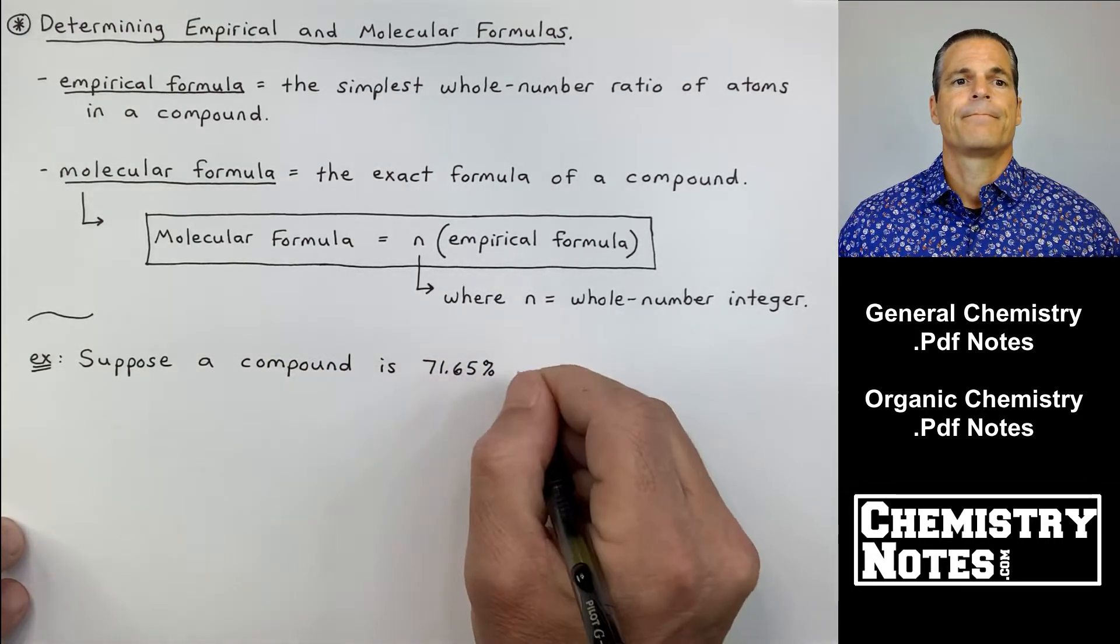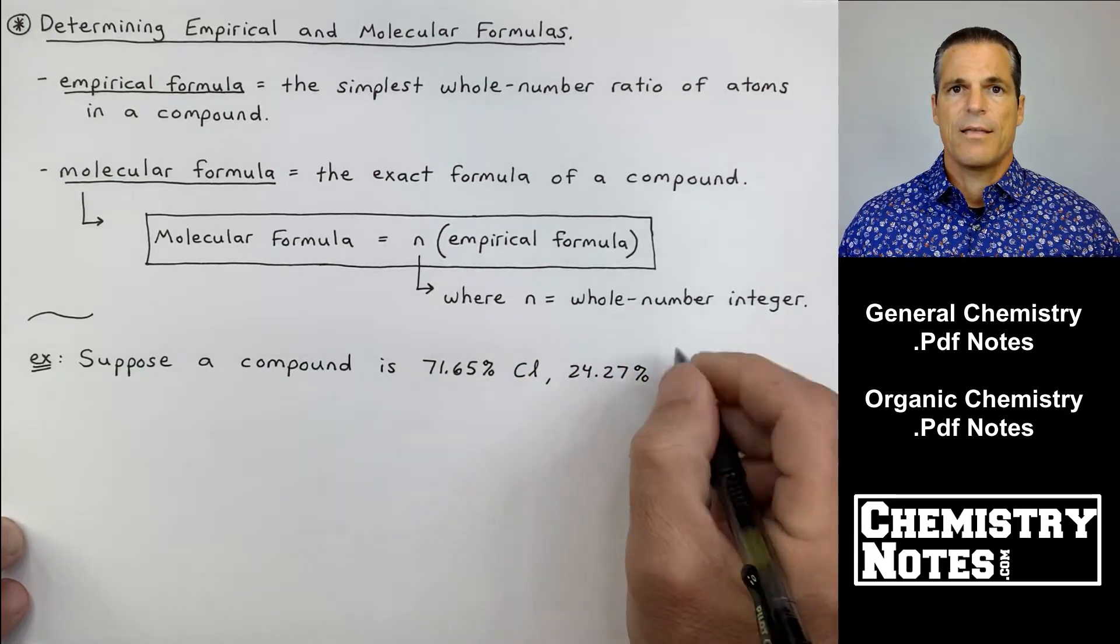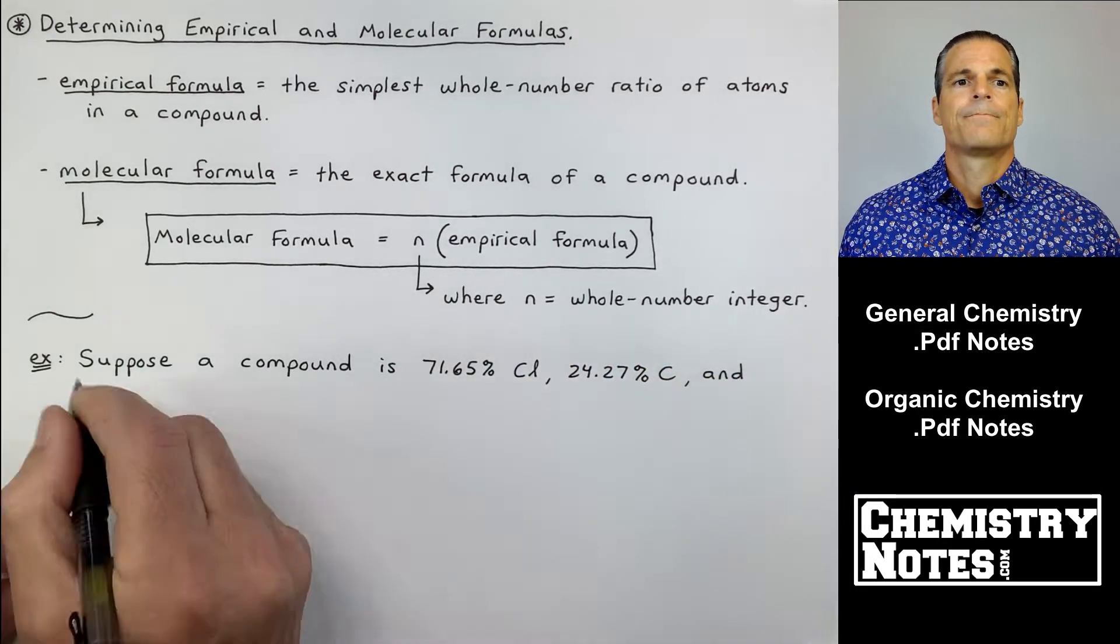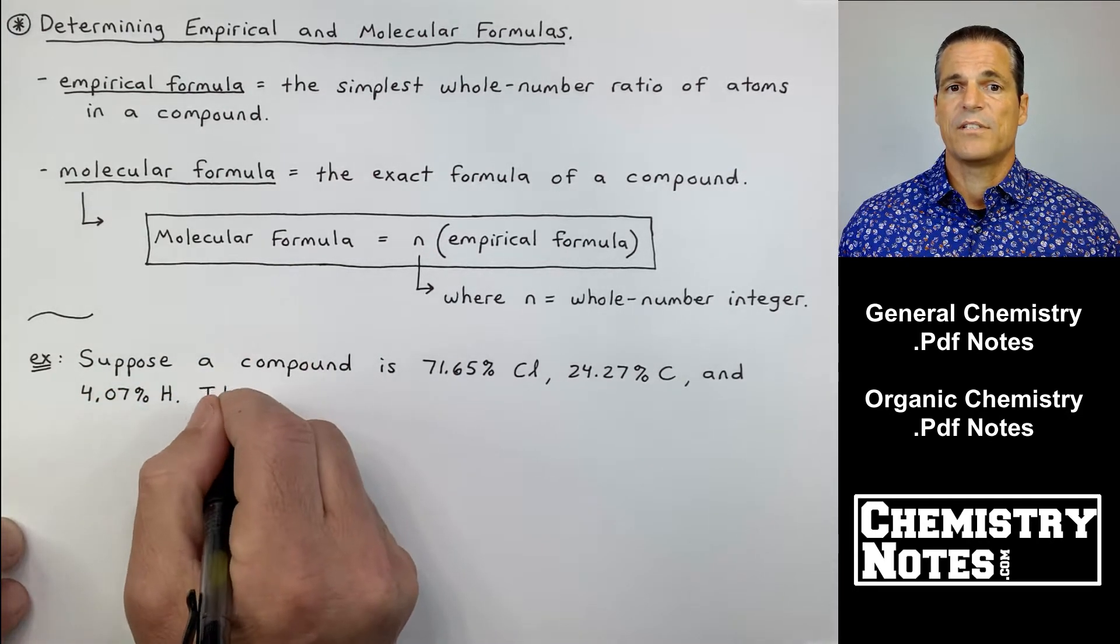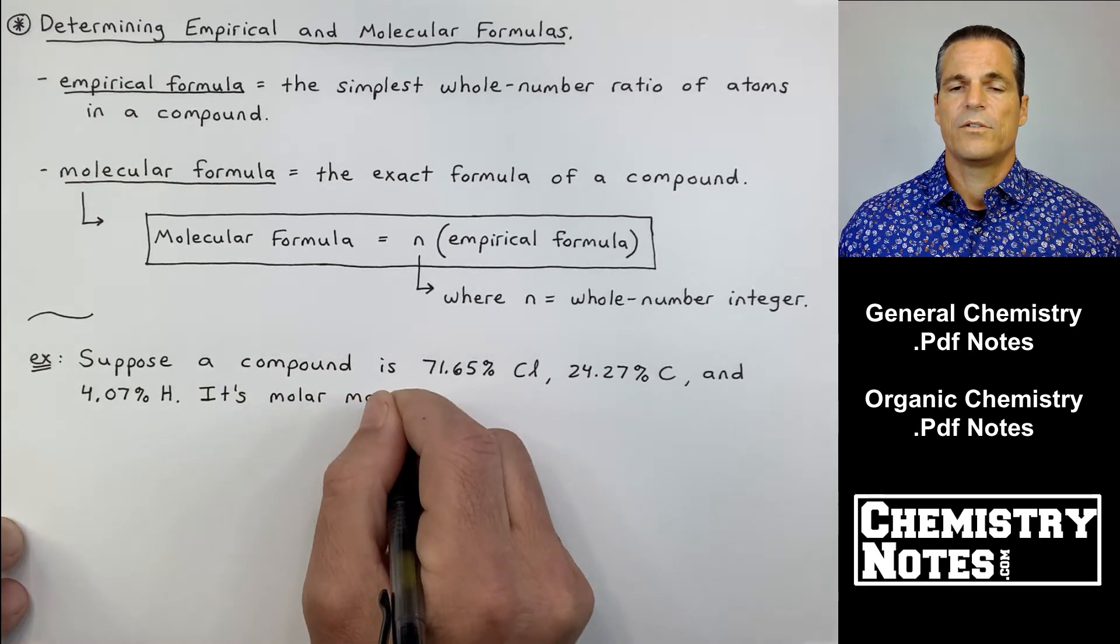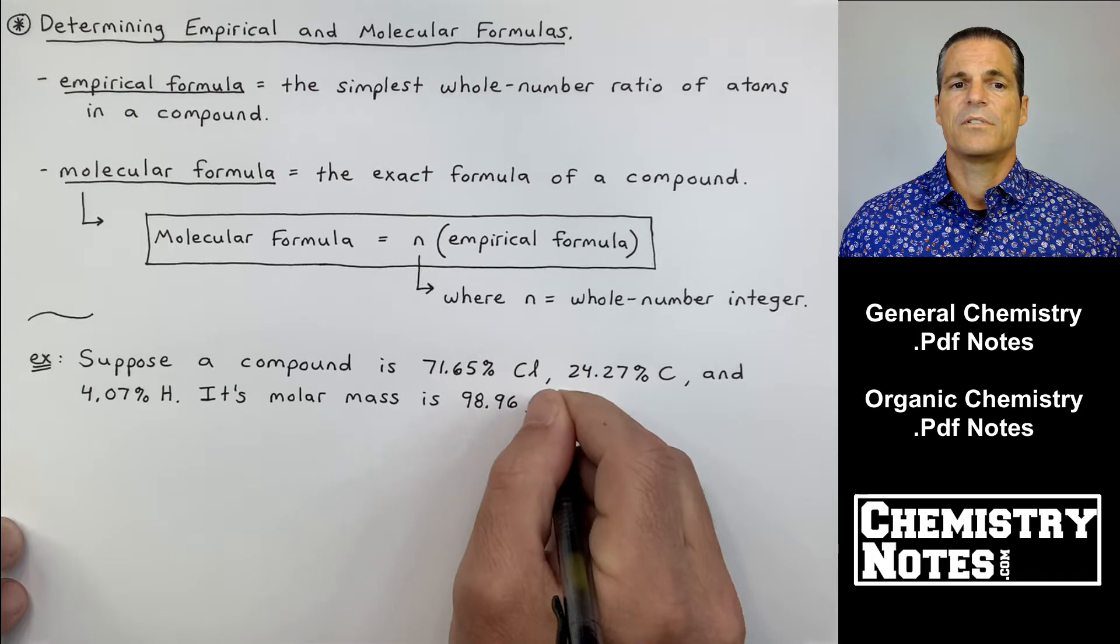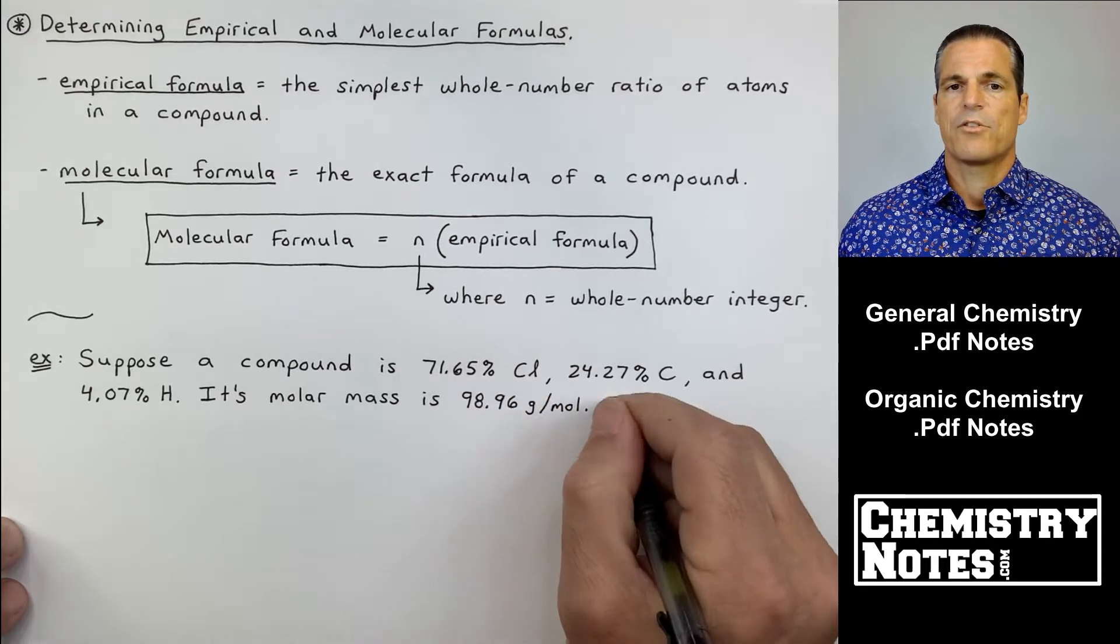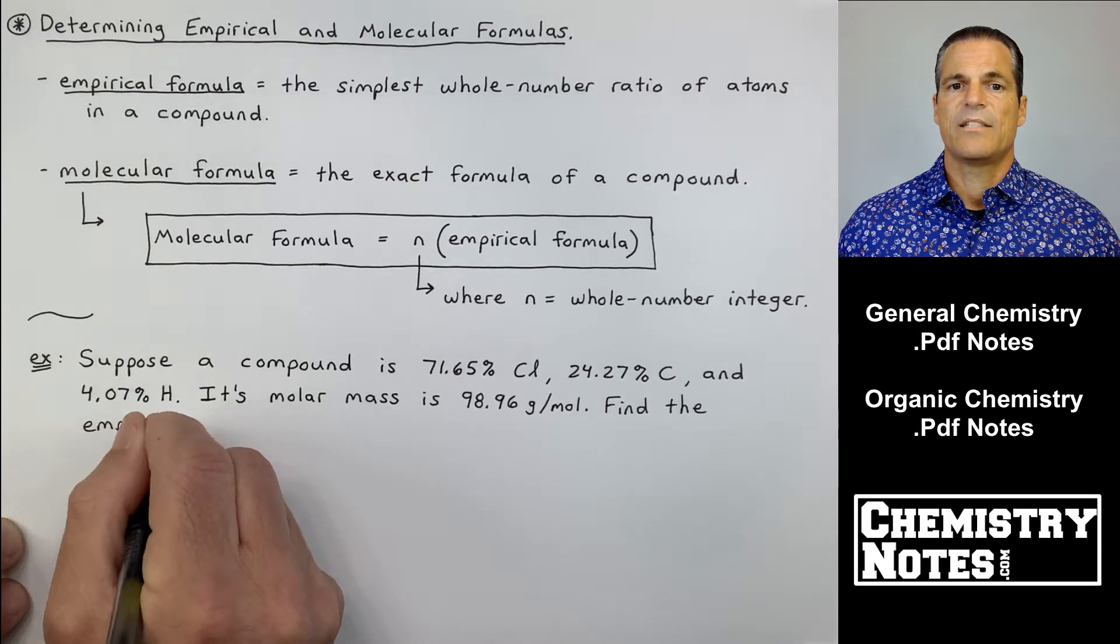Let's get right in. I'm going to do two sample problems to help hammer this topic home. First example: suppose a compound is 71.65% chlorine, 24.27% carbon, and 4.07% hydrogen. It's got three elements. Its molar mass is 98.96 grams per mole.